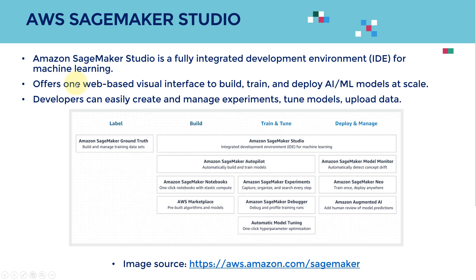So what is Amazon SageMaker Studio? SageMaker Studio is a fully integrated development environment, or IDE for short, for machine learning. I really like Amazon SageMaker Studio because it provides just one place — a one-stop shop — for everything you want to do within the machine learning workflow. So if you want to build, train, tune, deploy, and manage the model, you would be able to do everything in just one browser. That's an integrated development environment, or IDE, for machine learning.